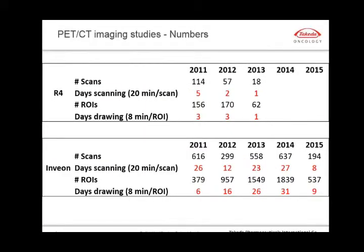I thought we processed a lot until I heard Jacob describe the number of ROIs imported in their systems. I pulled together the numbers for the Inveon and R4 in our labs and compiled the number of scans done over the past five years — 2015 is a little behind since it's older data. I also compiled the number of ROIs we drew and made the assumption that we spent about eight minutes drawing an ROI, accounting for time to transfer metadata, pre-process data, and generate reports. Processing data takes us a lot of time, and we'd like to minimize that time while maintaining quality.